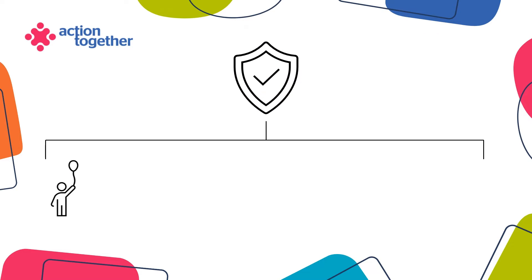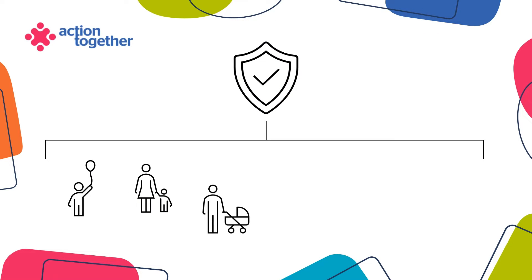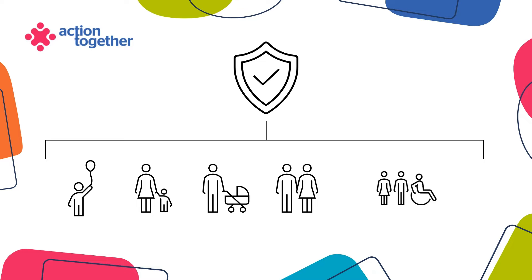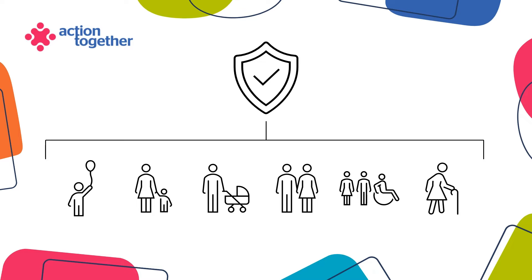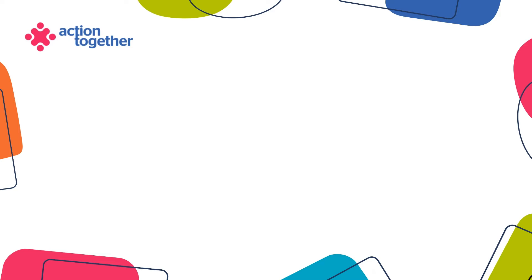Put simply, safeguarding describes the protecting of children and adults at risk from abuse or neglect. There are several different types of abuse which include physical,